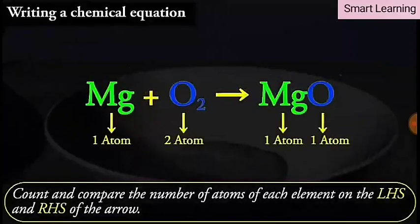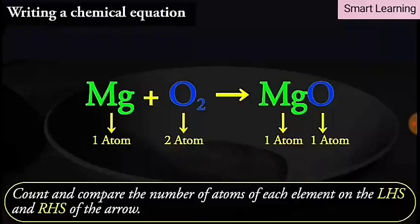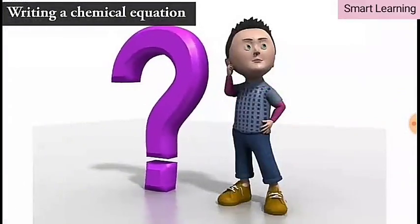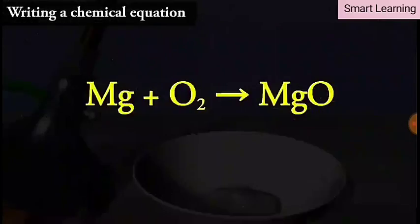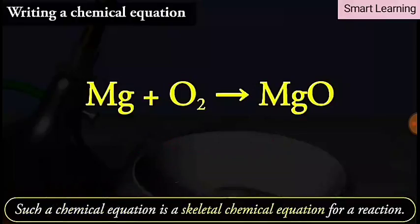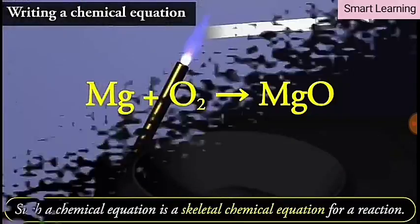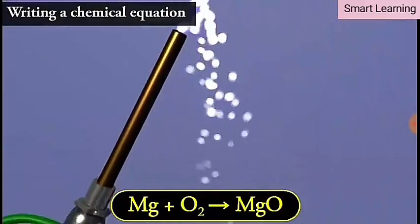Count and compare the number of atoms of each element on the LHS and RHS of the arrow. Is the number of atoms of each element the same on both sides? If not, then the equation is unbalanced because the mass is not the same on both sides. Such a chemical equation is a skeletal chemical equation for a reaction.